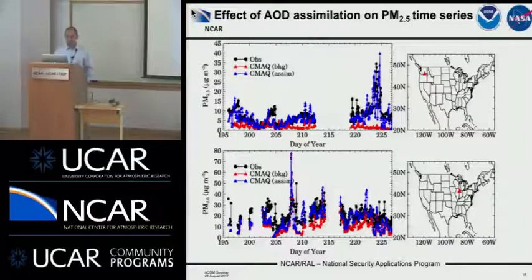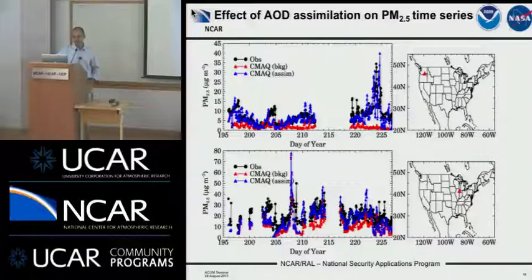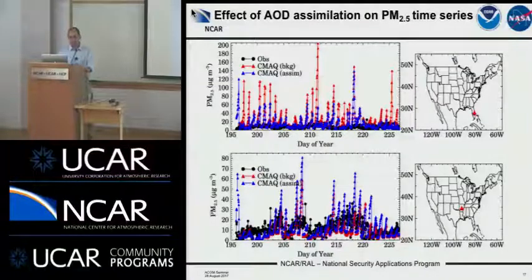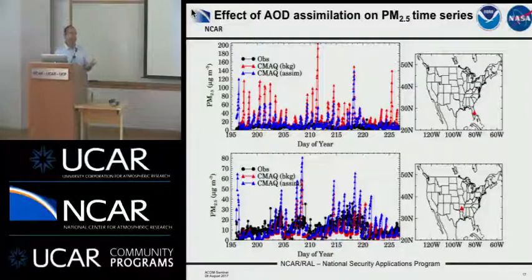Here is another example at a couple of stations where the model is clearly under-predicting the observed signal, but after data assimilation — shown in blue — it gets much closer to the observed values. At the top station in Florida you see the opposite situation where the model is overestimating the observation, and again our data assimilation system does a good job pushing the model back towards the observation. In general, the data assimilation system is working.